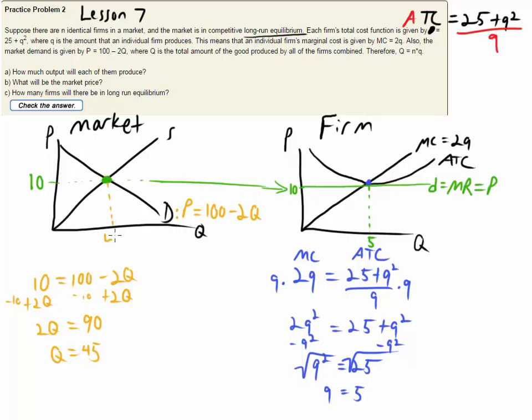So we come down here and we know that this Q is 45. So the total output in the market is 45. The number of firms is going to equal big Q, the number of things produced in the market, divided by little q, the number produced by each firm. So we get 45 over 5 and that will give us 9.